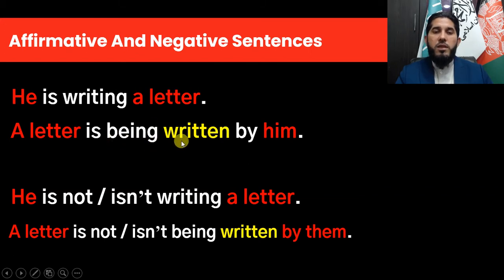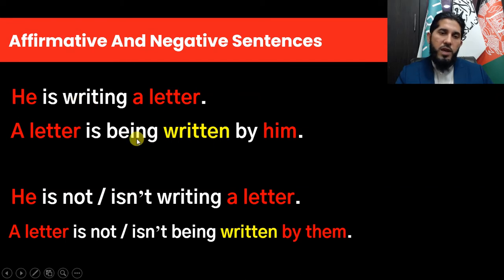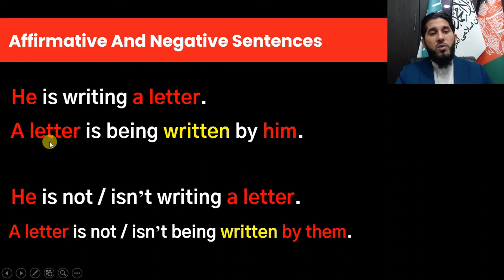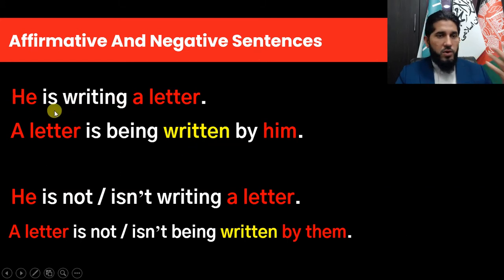Don't forget that in all continuous tenses we need 'being' before the third form of the main verb. The main verb is changed to its third form — here it was in '-ing' form 'writing,' and here it is changed to the third form, but before that we need 'being.' Before 'being' we need the to-be verb according to the subject. The subject here is 'a letter,' third person singular, therefore we use 'is.' So: 'He is writing a letter' — 'A letter is being written by him.'